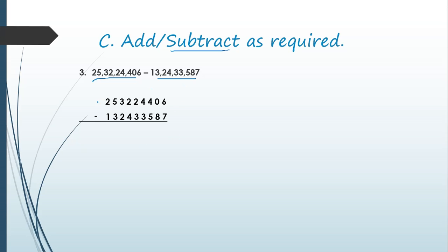Now we need to start subtracting starting from the lowest place to the highest place. In the lowest place, that is ones, we have 6 minus 7. Six is the smaller number, seven is greater, so we need to make it larger by borrowing from the next place. But in the next place we have a zero, and from zero we can't borrow anything.